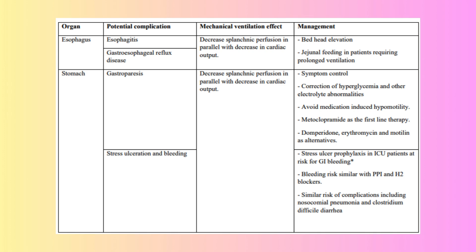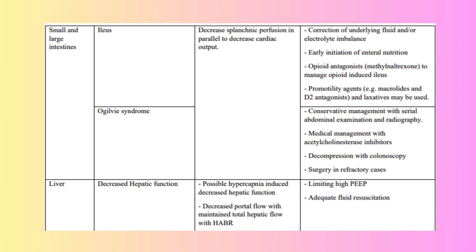Impact of Mechanical Ventilation on the GI System: Positive end-expiratory pressure (PEEP) reduces splanchnic GI blood flow, impacting the liver, spleen, and pancreas. High PEEP levels decrease cardiac output, leading to organ ischemia. Prone positioning increases intra-abdominal pressure but shows no major negative impact on GI function or hepatic perfusion. Permissive hypercapnia can increase splanchnic blood flow but lacks clear evidence on significant effects on GI function.